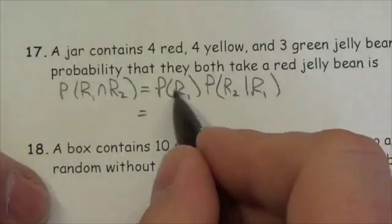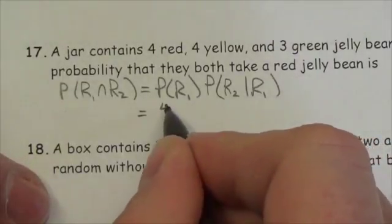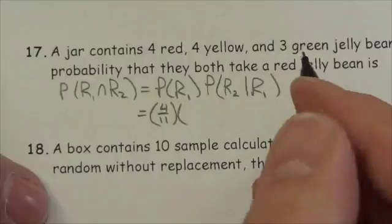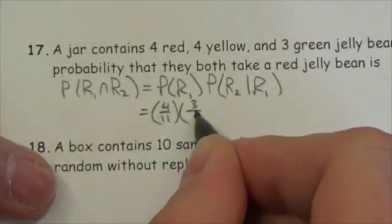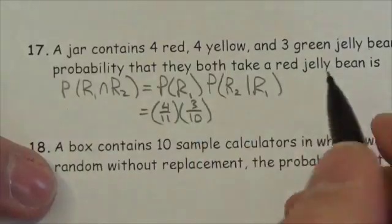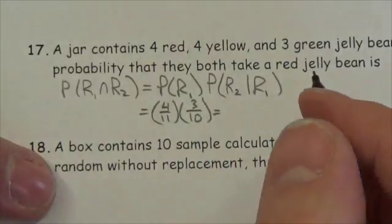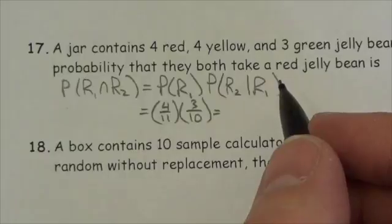So probability of getting a red on the first one was four out of eleven. Assuming that first one was red, that means there are three left over out of ten.